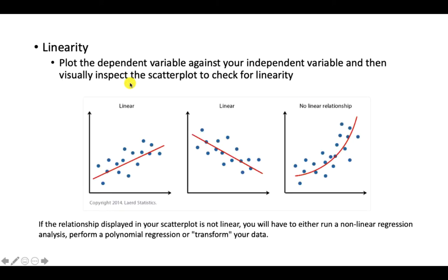As for linearity, there needs to be a linear relationship between IV and DV. It doesn't matter if it's a positive or negative linear relationship, as long as it doesn't curve. If it's curved, then you know that you have a non-linear relationship and you can't run a simple linear regression — you have to run non-linear regression.